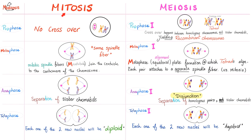Comparing mitosis and meiosis one: in mitosis pro phase there is no crossover. But in meiosis one, pro phase one — yes, there is crossing over, yielding recombinant chromosomes. We call them tetrads because they are four chromosomes standing next to each other.